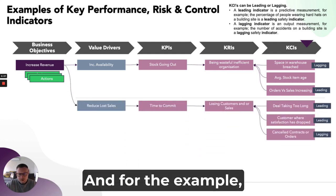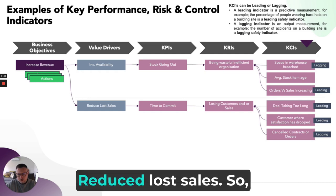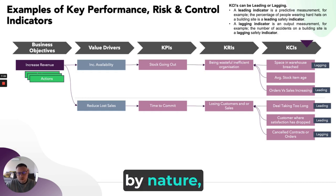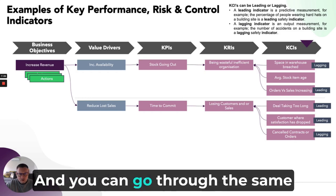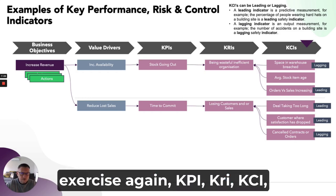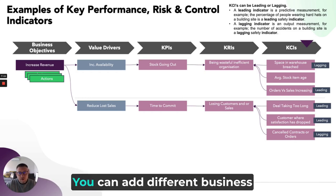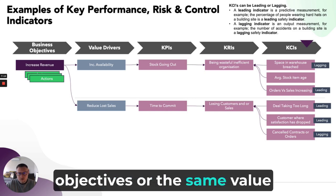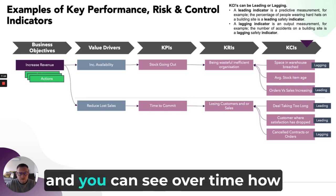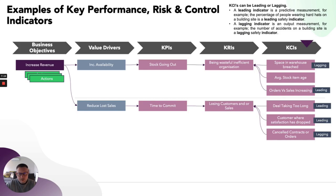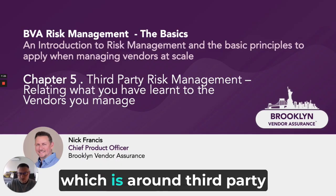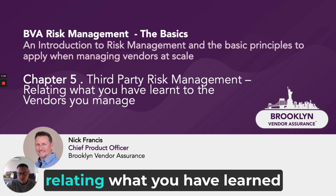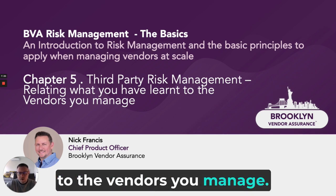You can use the same approach for the value driver of reducing lost sales — by reducing lost sales you directly increase revenue. You go through the same exercise again: KPI, KRI, KCI, and so on. You can add different business objectives or different value drivers for the same business objective, and you can see over time how you would build that up. Next time we're going to talk about Chapter 5, which is around third-party risk management — relating what you've learned to the vendors you manage.